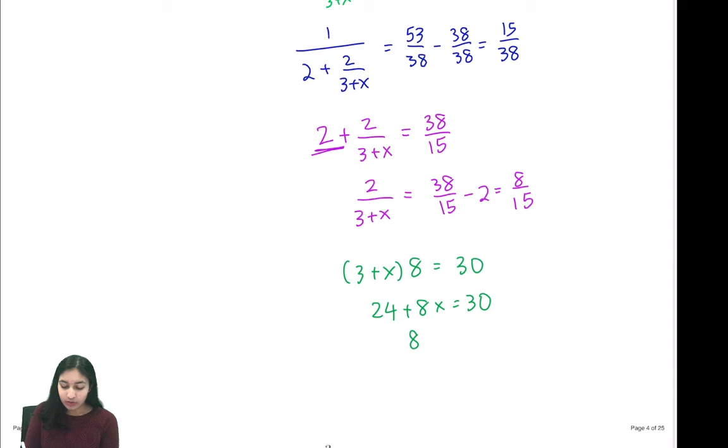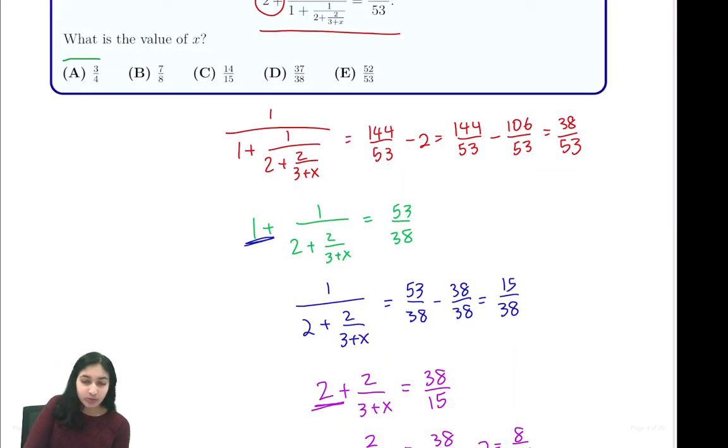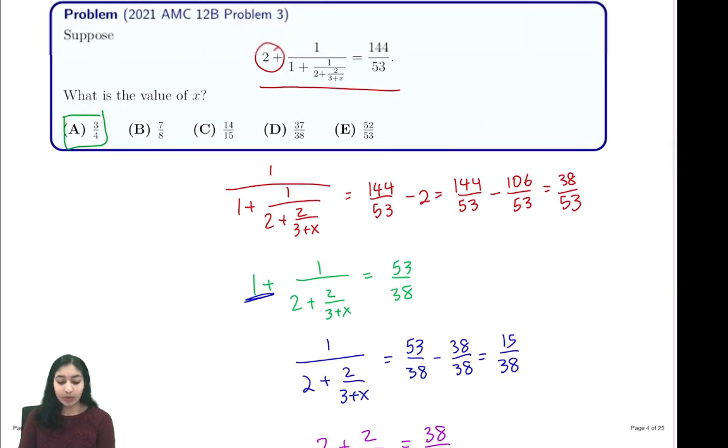Rearranging gives us 8x equals 6, or x equals 6/8, which is 3/4, and that is option choice A. So A is our answer. To summarize, we went step by step, alternating between eliminating our extra term in front and our numerator of 1, until we reached our final answer of 3/4.